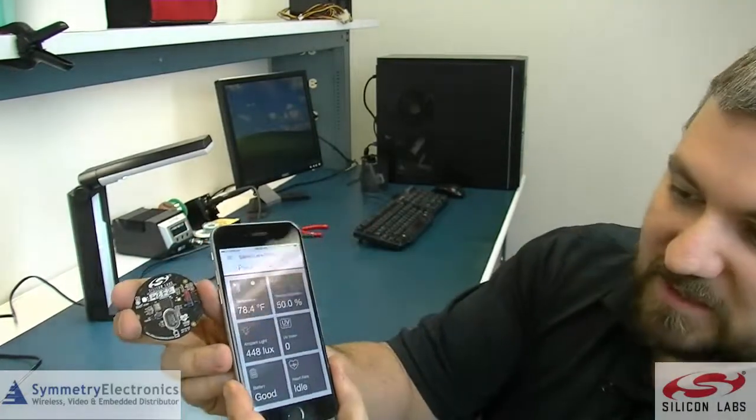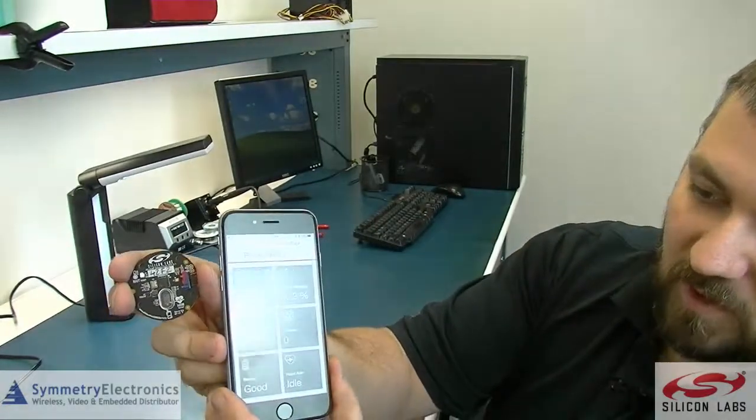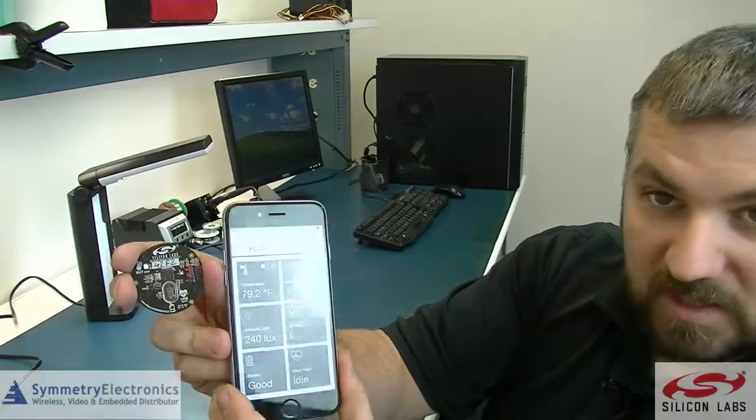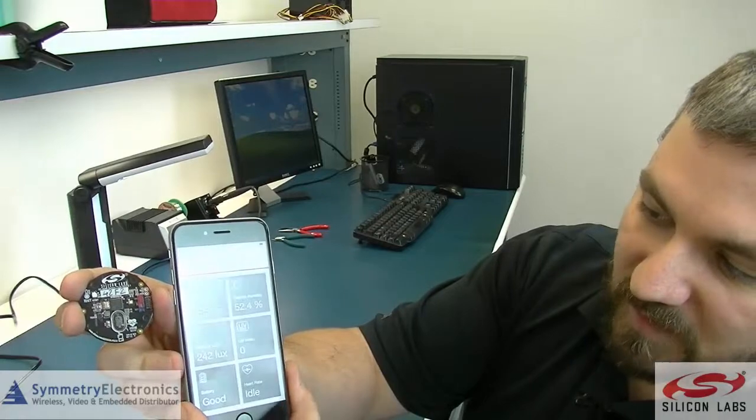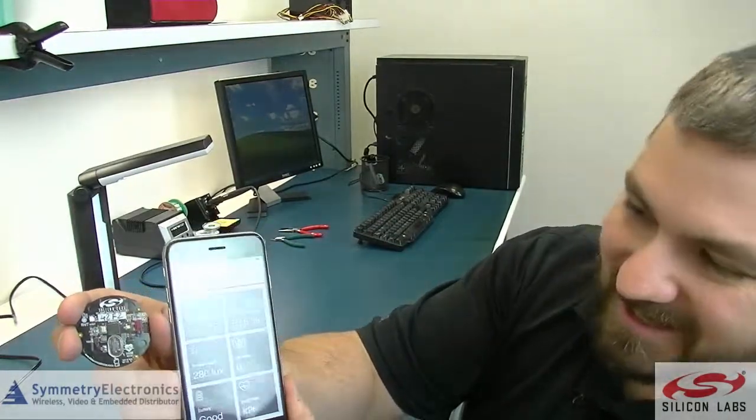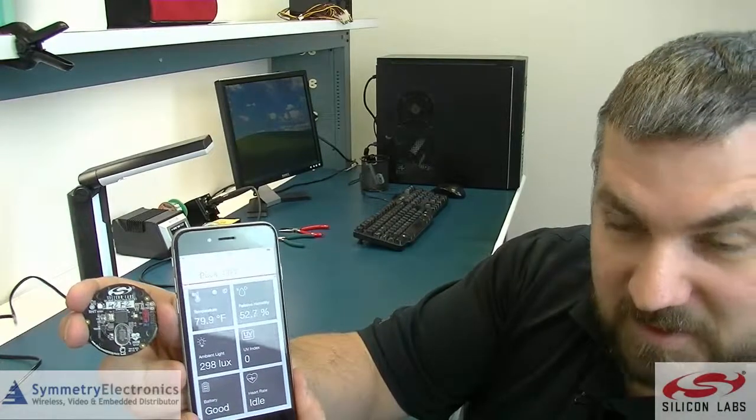You can see the ambient light below that is 400, dropping to 240 because of where I've got it located. UV rating is zero because we're in a room under fluorescent lights. You can see the relative humidity 52.8.